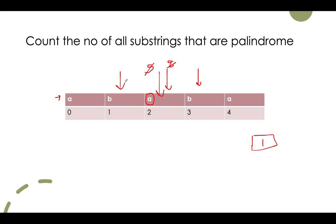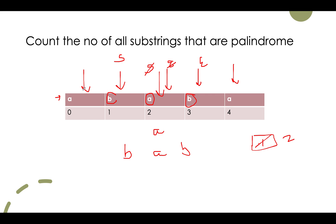We then decrease start and increase end. Start points left and end points right. We compare whether the characters at start and end are equal. They are equal, so we increment the count — we get two, corresponding to substring 'bab'. We continue: start and end move further out, the characters are equal again, count becomes three. So far, with index 2 as the midpoint, we can generate three palindromic substrings. For each index we check the number of palindromic substrings possible with that index as midpoint.